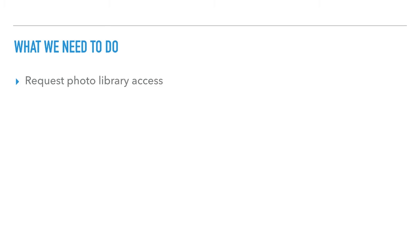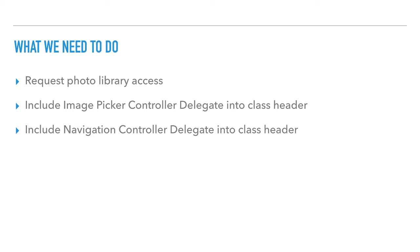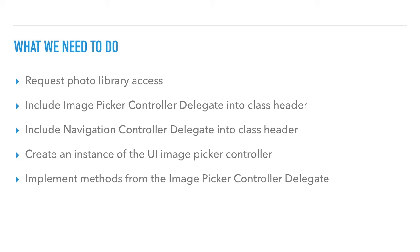To go over what we covered last video: we need to request photo library access. After that, we need to include the UIImagePickerControllerDelegate and the UINavigationControllerDelegate in our class header. Then we'll create an instance of a UIImagePickerController and implement the delegate methods to make it work. Last but not least, we'll set some of the picker details. Let's get started.